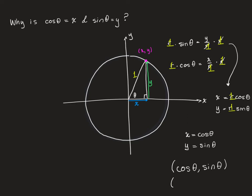You'll also see x equals r cosine theta and y equals r sine theta used as coordinates. And sometimes we know what r is and sometimes we don't, in the same way that we sometimes know what theta is, and sometimes we don't.